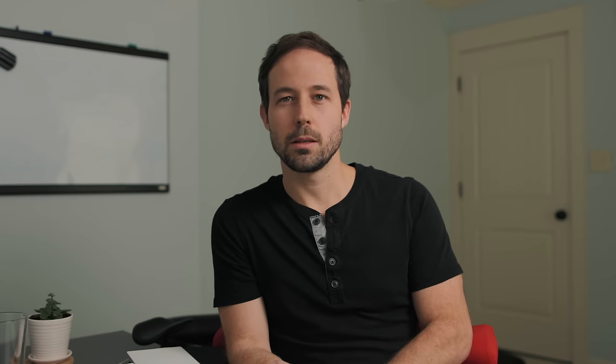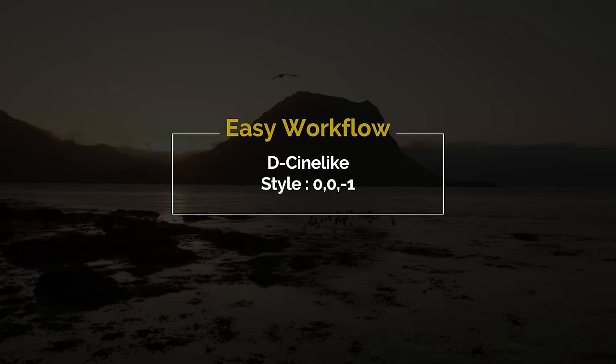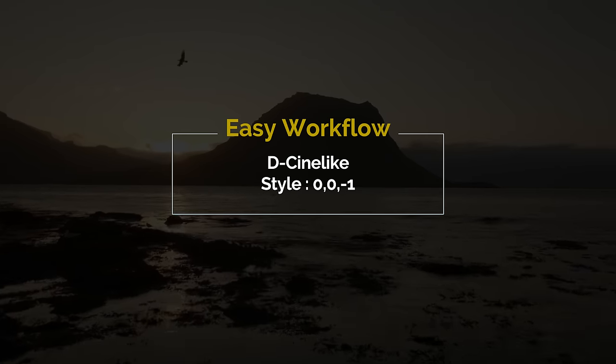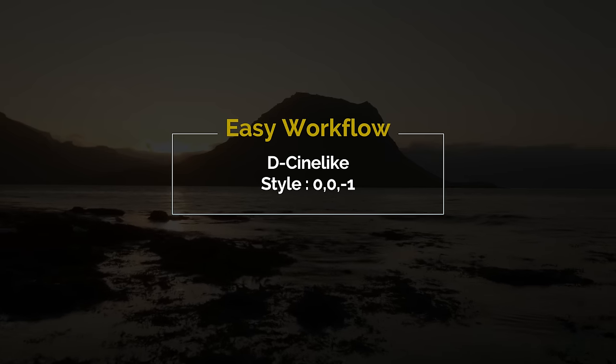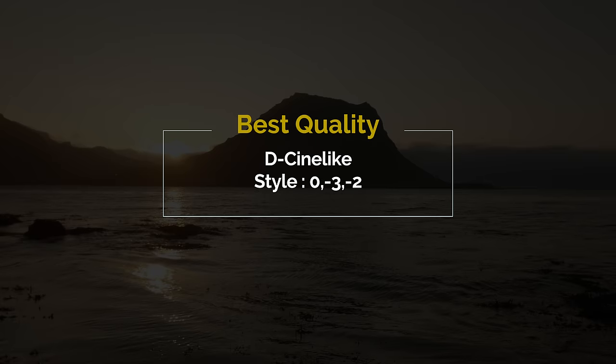If you're shooting with the Mavic Air and editing on your phone, I don't suggest doing a lot of post-processing. Just shoot with zero sharpening, contrast at zero, and saturation at negative one — it'll look good straight out of camera. If you're doing professional work and want to get the most out of the image, I suggest zero sharpening again, negative three contrast, and negative two saturation.